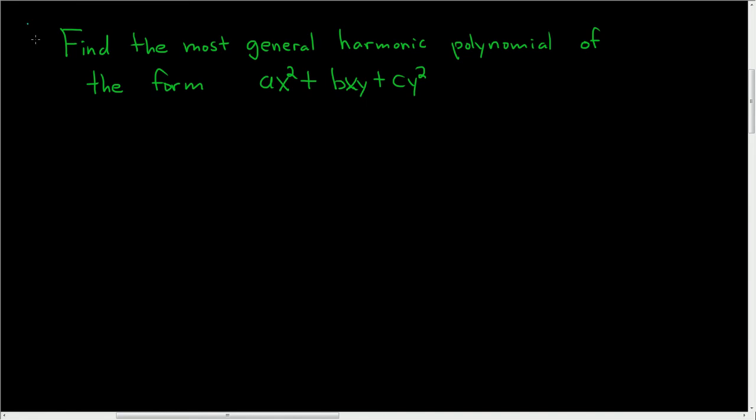Find the most general harmonic polynomial of the form ax squared plus bxy plus cy squared. Let's go ahead and work this out.